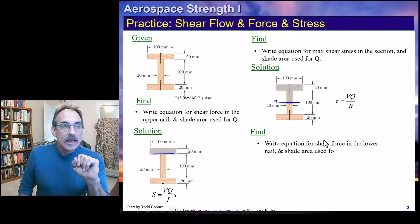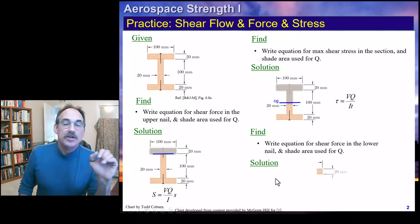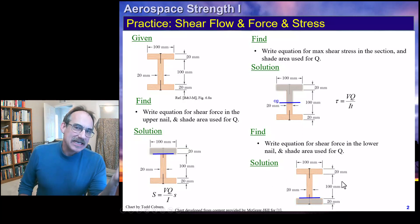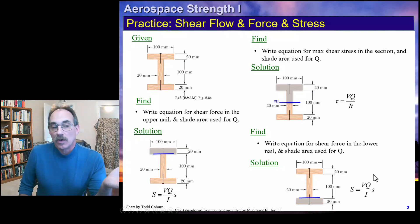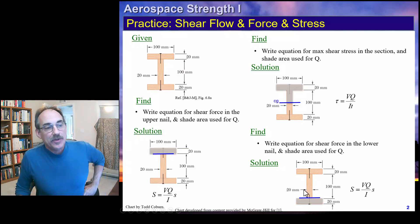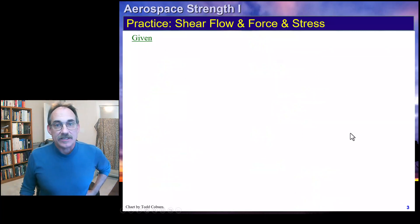For the shear force in the lower nail, we do this exactly the same way. We now have the lower piece; Q is technically negative but we ignore that since we're looking for magnitude. Due to symmetry, it's going to have the same Q as that upper flange we analyzed first.